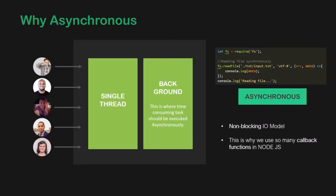Once the data is read, our callback function gets called to be executed in the main single thread in order to process the read data. That's a high-level overview of how Node.js handles asynchronous behavior to implement the non-blocking I/O model discussed in the intro lecture. I/O stands for input-output — basically accessing the file system and handling network requests. This is the whole reason why Node.js is completely designed around callbacks. In other programming languages like PHP, you get one new thread for each new user — a completely different paradigm. But the creators of Node.js found this non-blocking I/O model to be the best solution for building high-performant and scalable web applications.